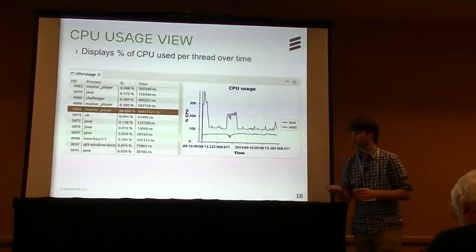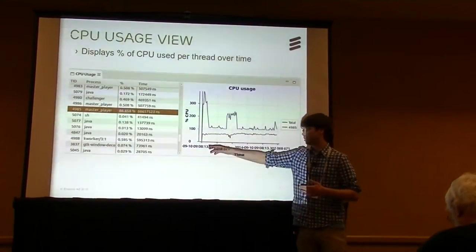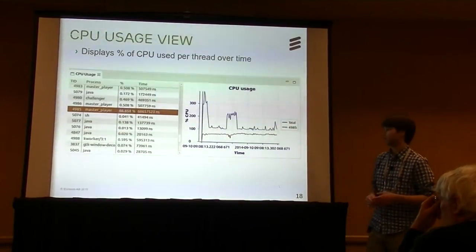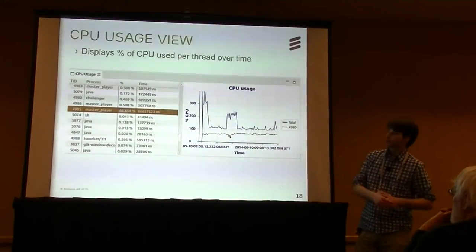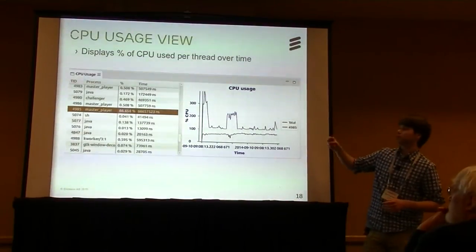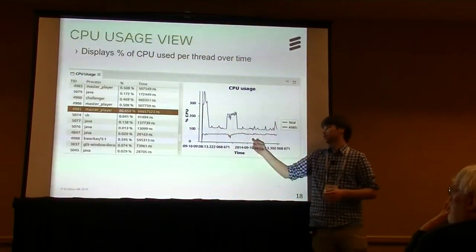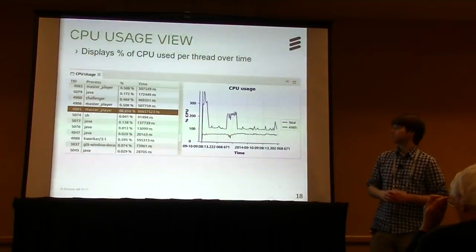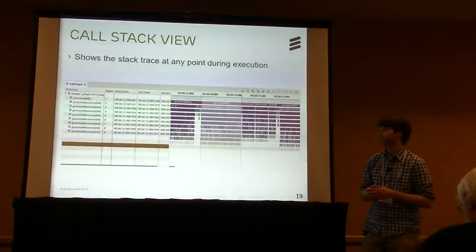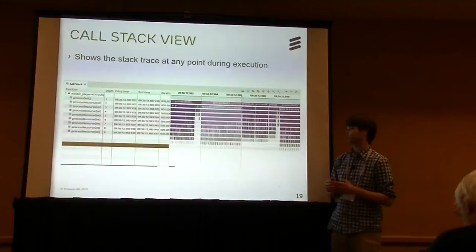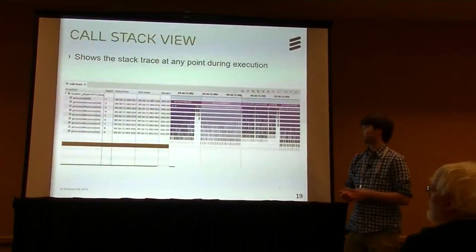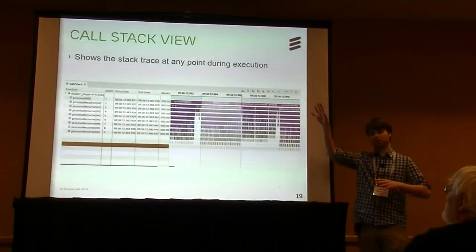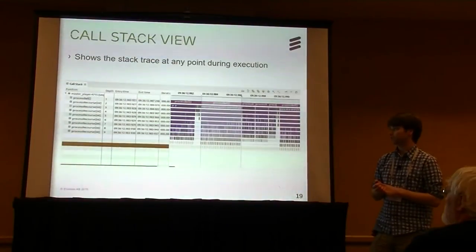The CPU usage view also uses the state system, displaying CPU load percentage over time. At the beginning the CPU load was very high — around 400% — because we have many cores, then it decreases. On the right side you see the names of the processes and their threads. You can click on a thread to see its contribution to the CPU load on a graph. You can still zoom in and navigate. The call stack view shows function calls over time; when you select a time range, it synchronizes all other views.